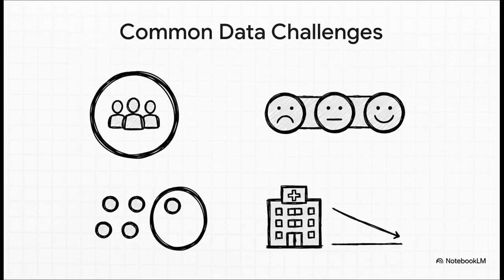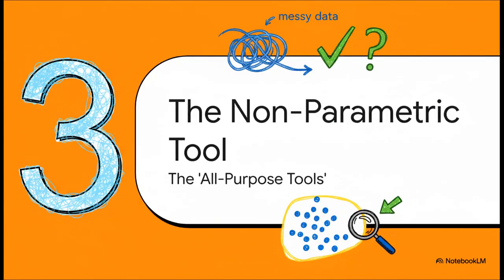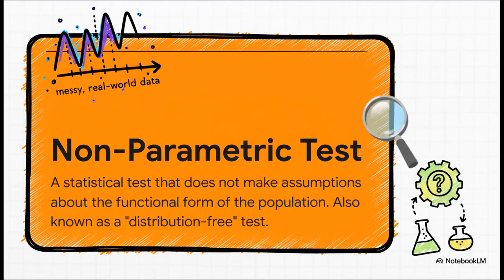So where does all this messiness come from? In health studies, there are common culprits. You might be studying a rare disease, so you only have a small group of patients. Or your data isn't a precise number but a ranking — like a patient's pain level: mild, moderate, or severe. Then you've got outliers: that one patient whose test result is wildly different from everyone else's. And some things, like how long people stay in a hospital, are just naturally skewed. All of these situations can blow those parametric assumptions right out of the water. So what do you do? You reach for a different kind of tool — the non-parametric alternative. If parametric tests are the scalpel, think of these as the all-purpose Swiss army knife. They're built for the real, messy world, and they do not make those same strict assumptions about how your data is shaped. That's why they're often called distribution-free tests.